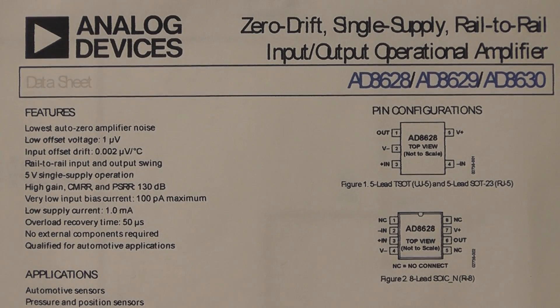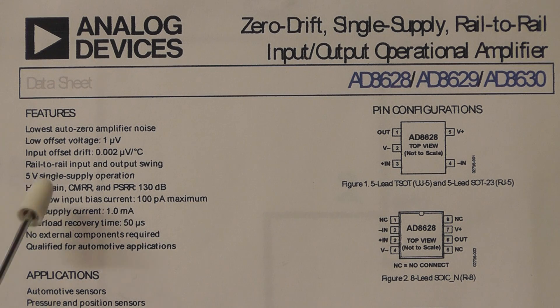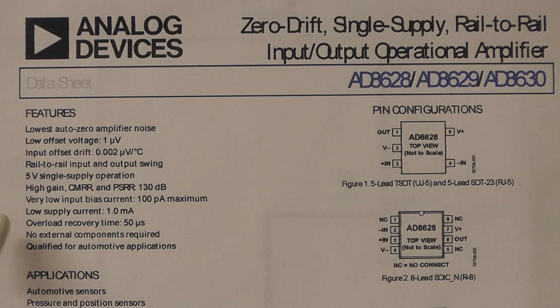Just before we move on to the module itself, I'll just quickly show you from the datasheet some of the main advantages of using this new op-amp, the AD8628. As I said, it's got a very low offset voltage of only one microvolt and an offset drift of 0.002 microvolts per degree centigrade. And it can also give you a true rail to rail input and output swing. So we should get an accurate reading on the output. It's designed to operate off a 5 volt supply and it has a very low input bias current of 100 picoamps maximum and low current overall of 1 milliamp. So this particular IC is ideal really for an instrument such as a millivolt meter.